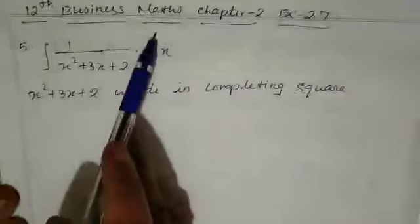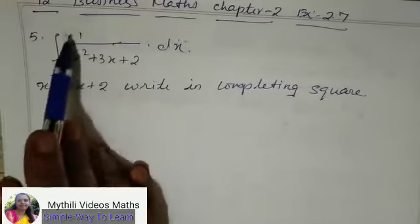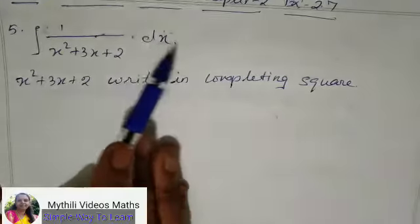Hi students, this is 12th Business Maths, Chapter 2, Exercise 2.7, 5th sum. That is the integration of 1 divided by x squared plus 3x plus 2 into dx.